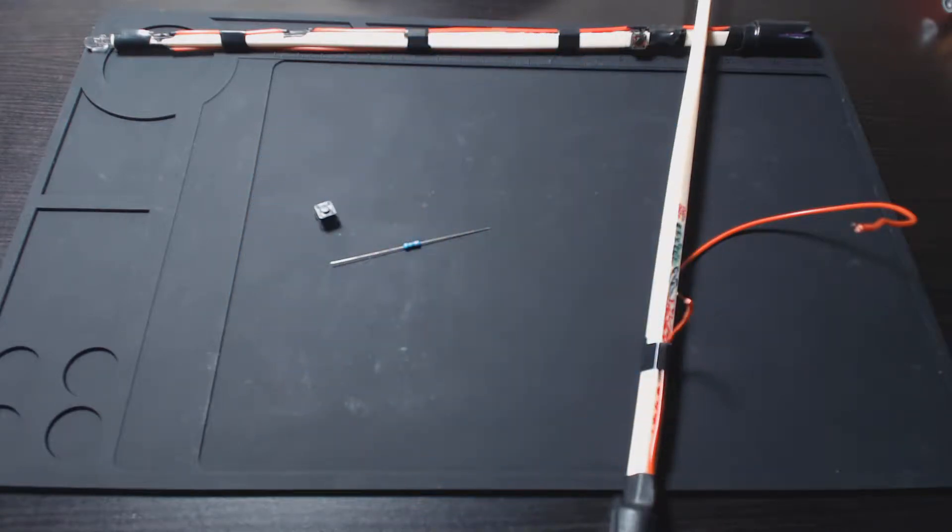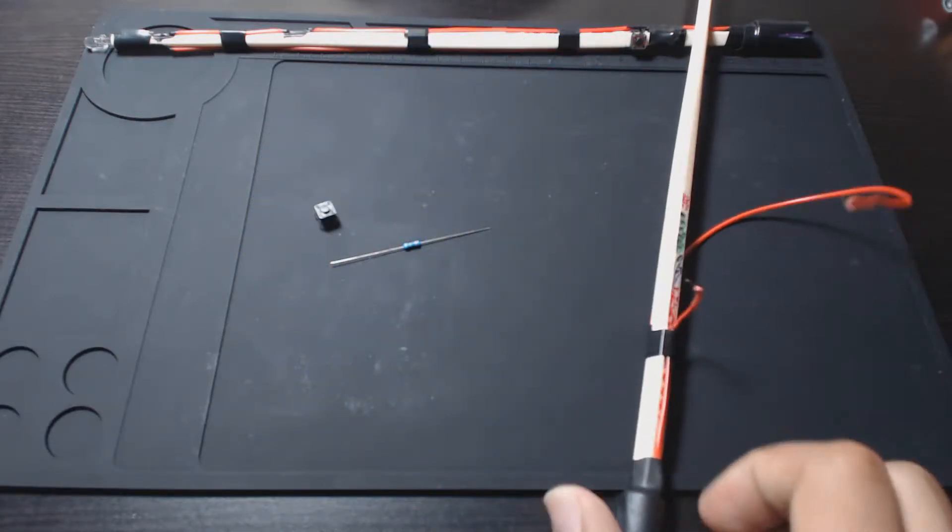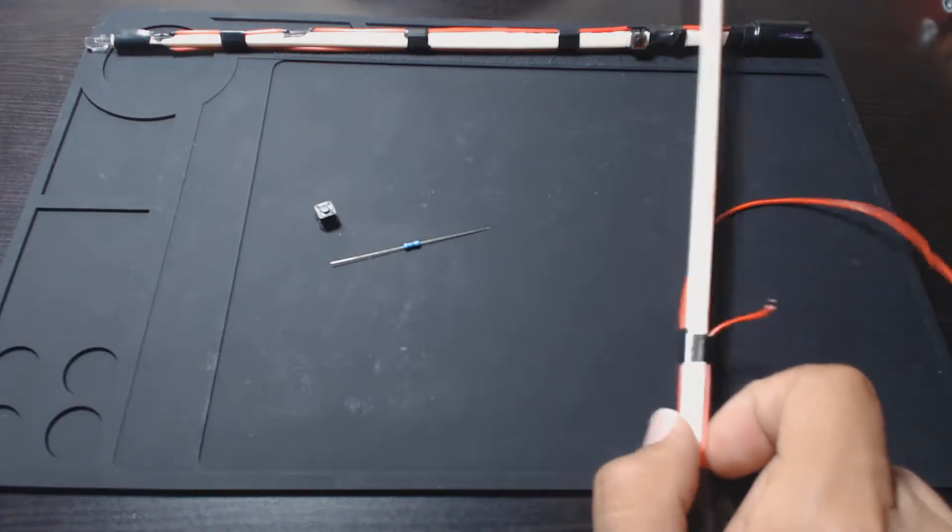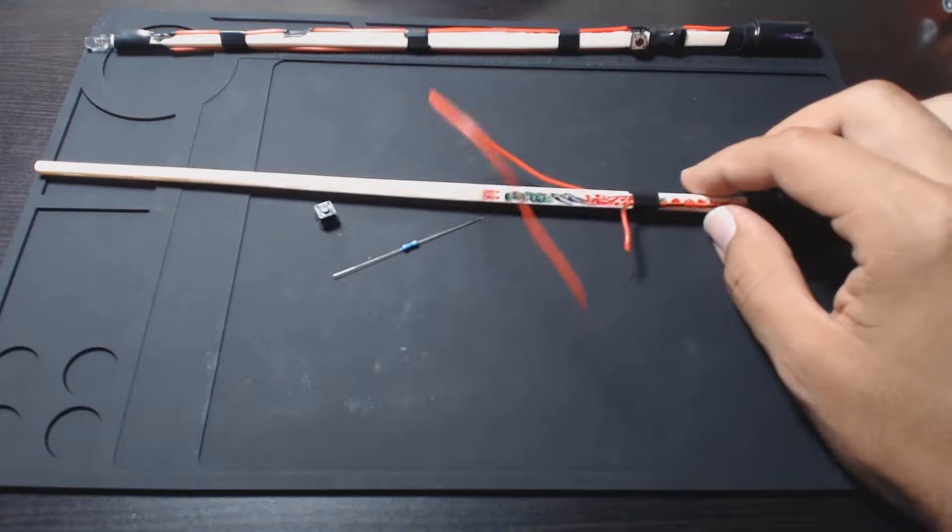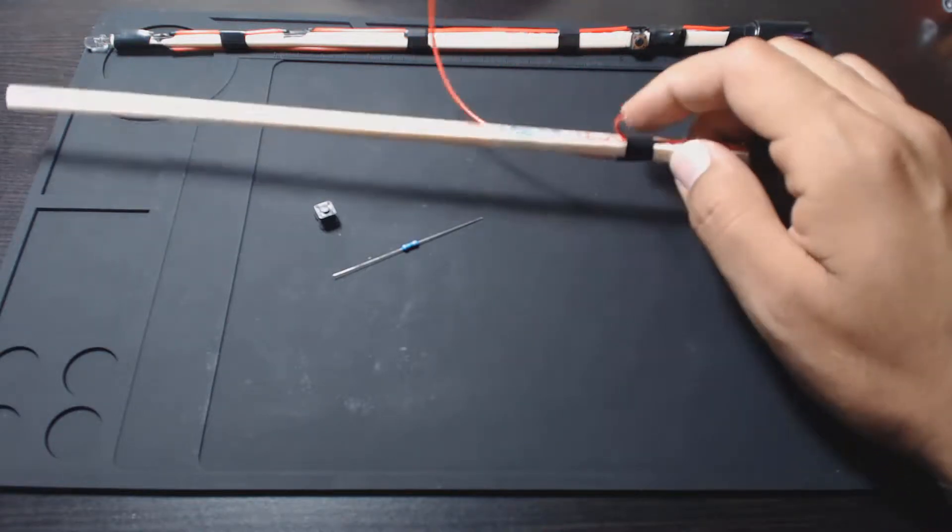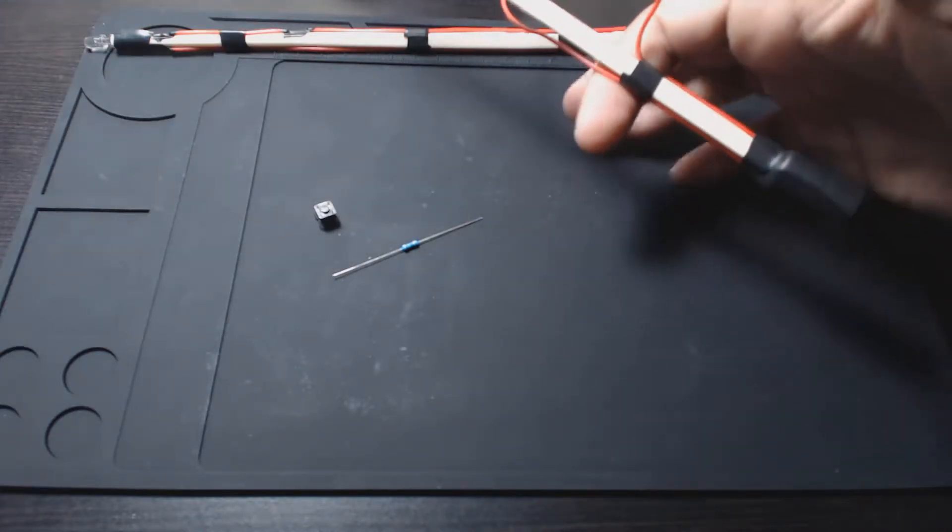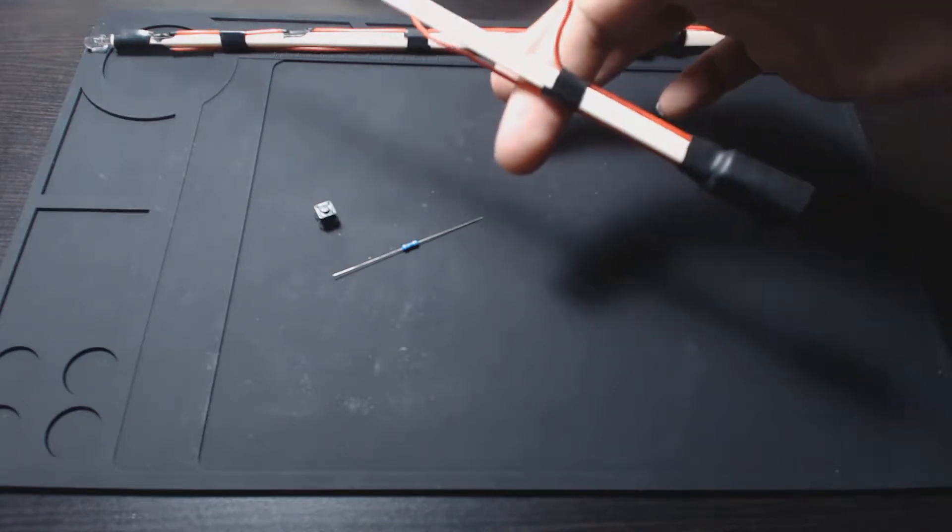Welcome back. We're going to go ahead and start on the electrical components for this one, so let's get started. Okay, so we've got our resistor and our button here. Placement is kind of up to you. If you want to get fancy, maybe you can find the balance point, which for me is actually where that tape is.